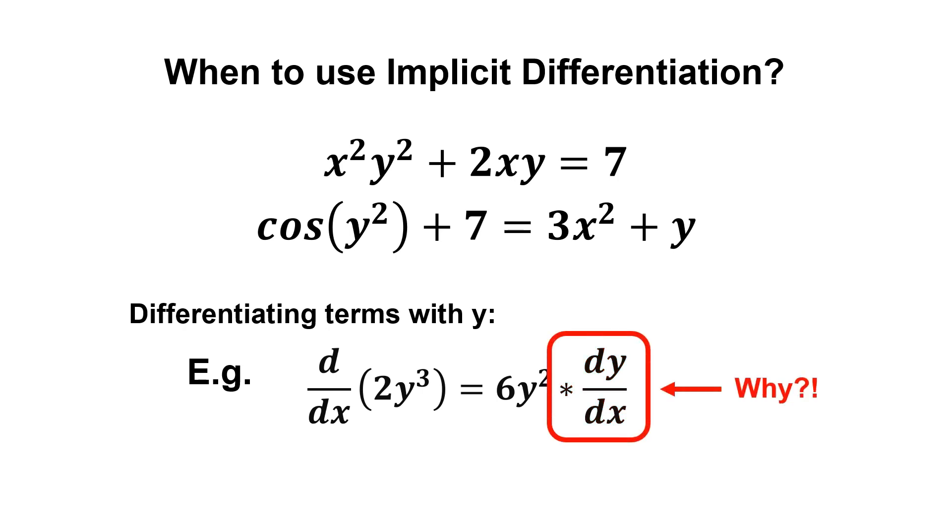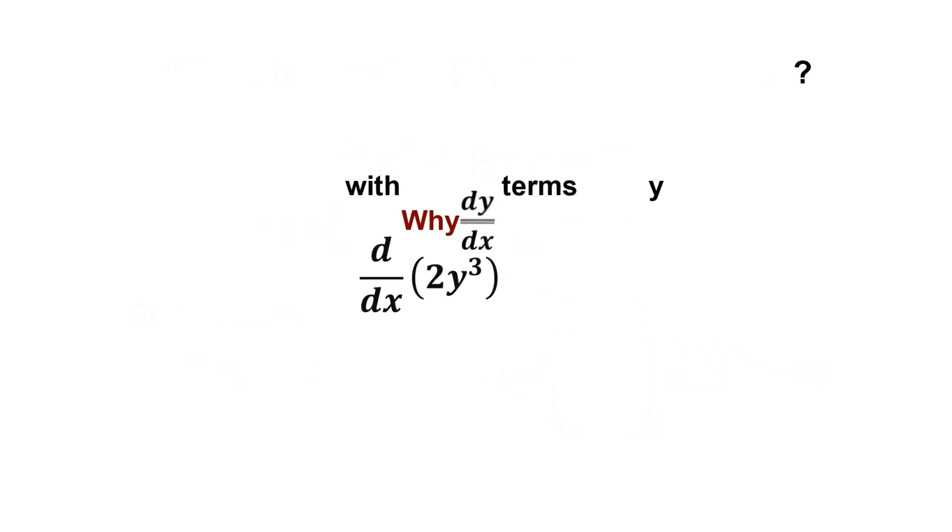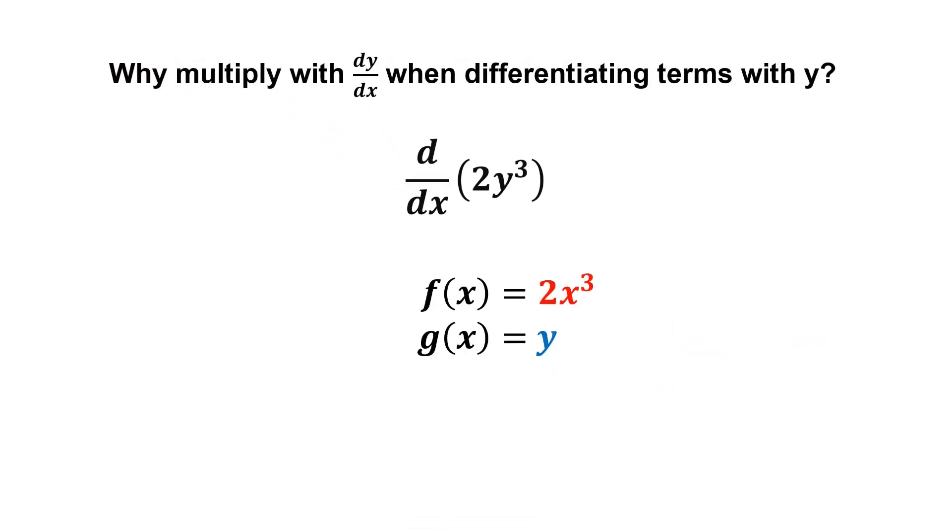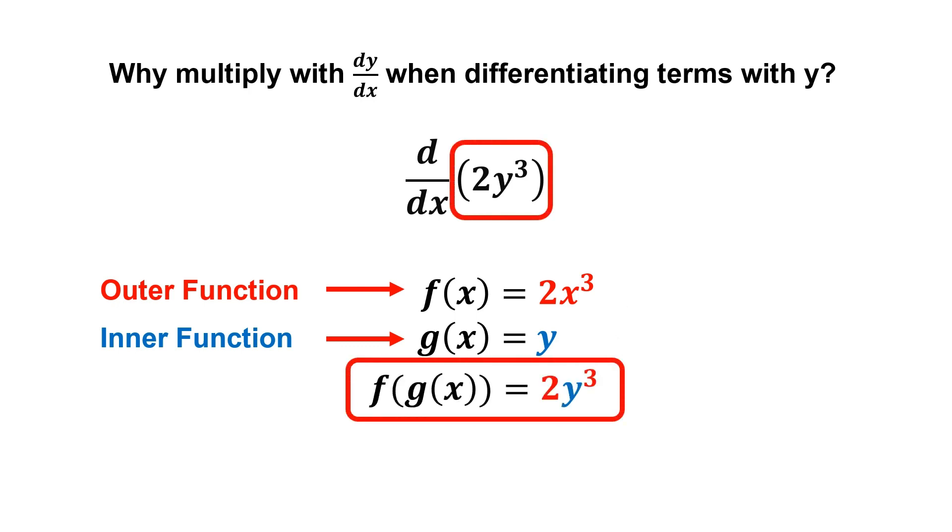In case you're wondering why we multiply with dy/dx, you can actually think of it as taking the derivative of a composite function. Notice that we can separate it into outer and inner function, and when we put g(x) into f(x), we get the initial function, 2y³. Therefore, we can apply the chain rule.